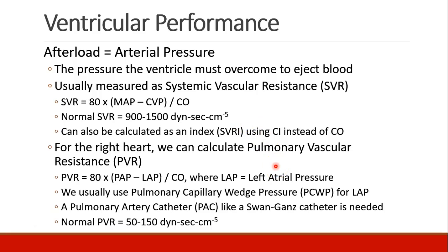This concept of afterload exists for both the left and the right heart. The left heart has systemic vascular resistance, while the right heart pumps against a pulmonary vascular resistance, or PVR. It's calculated exactly the same way, except instead of using mean arterial pressure and CVP, we use pulmonary artery pressure and left atrial pressure — approximated using the pulmonary capillary wedge pressure from the pulmonary artery catheter. A normal PVR is much, much lower — the pulmonary system is a low-resistance system, comparably only 50 to 150, versus 900 to 1500 for SVR.